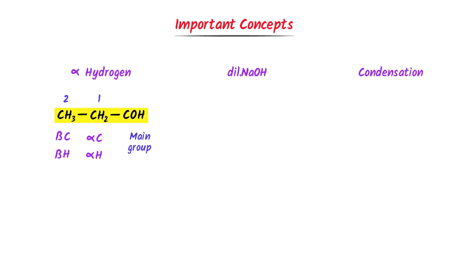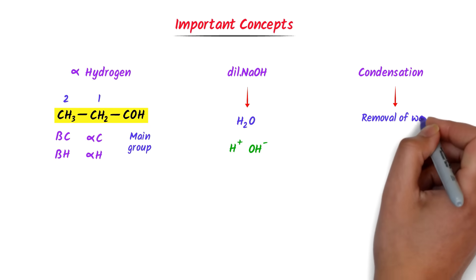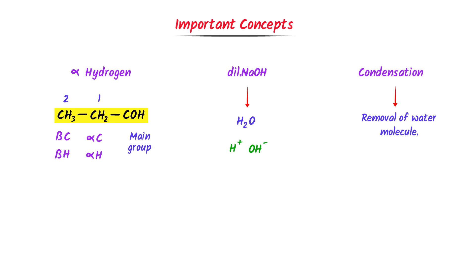Remember alpha hydrogen and beta hydrogen. On the other hand, dilute sodium hydroxide means that it also contains water. We know that water has positive hydrogen ions and negative hydrogen ions. Lastly, condensation means the removal of water. Usually, we heat the reactants in order to remove a water molecule from it. Thus, remember these important concepts.